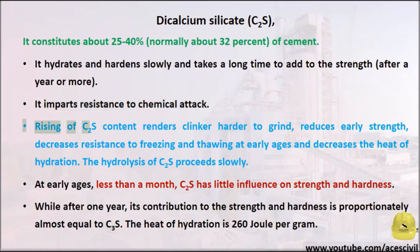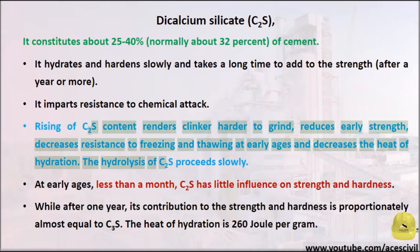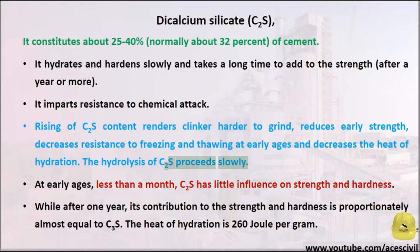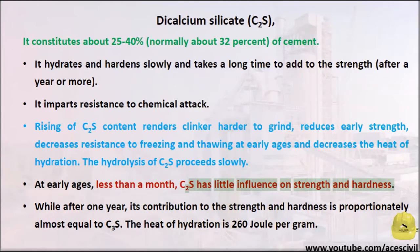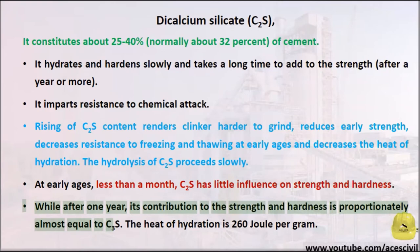Raising the C2S content renders clinker harder to grind, reduces early strength, decreases resistance to freezing and thawing at early ages, and decreases the heat of hydration. The hydrolysis of C2S proceeds slowly. At early ages, less than a month, C2S has little influence on strength and hardness. While after one year, its contribution to strength and hardness is proportionately almost equal to C3S.